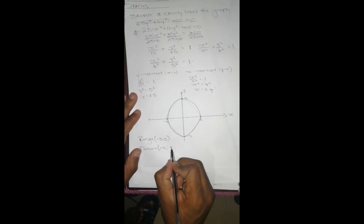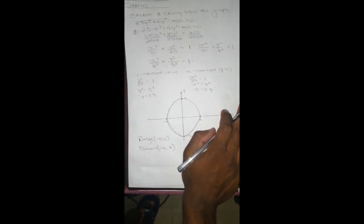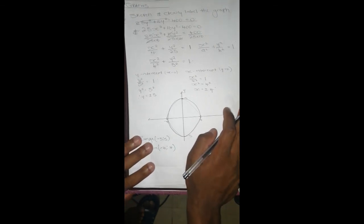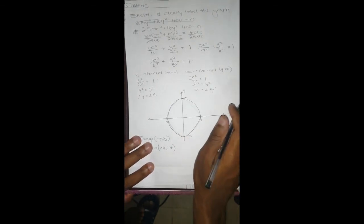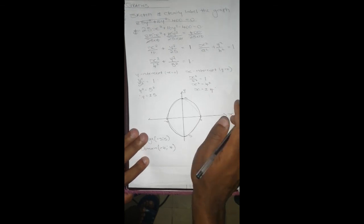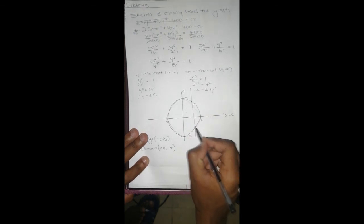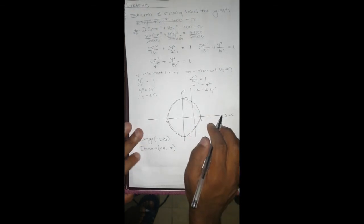Sometimes they would ask you things like is this a function. To test whether it's a function or a relation, you just draw a vertical line. If that vertical line touches a graph once then it's a function, but if it touches it twice then it's not a function. If you check here, if you do this, it touches it here and here. So therefore this is not a function.